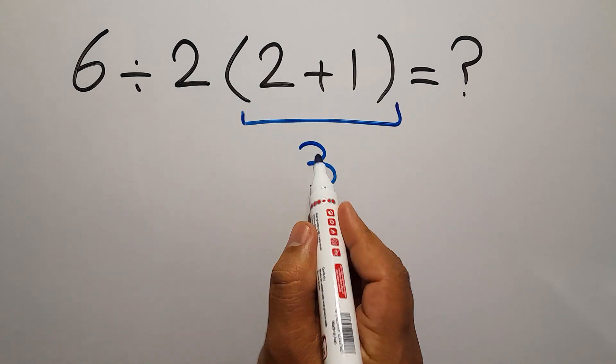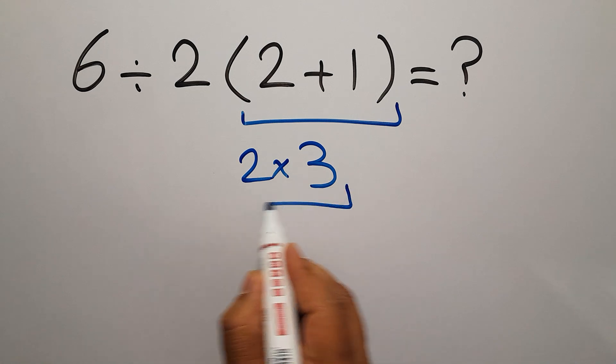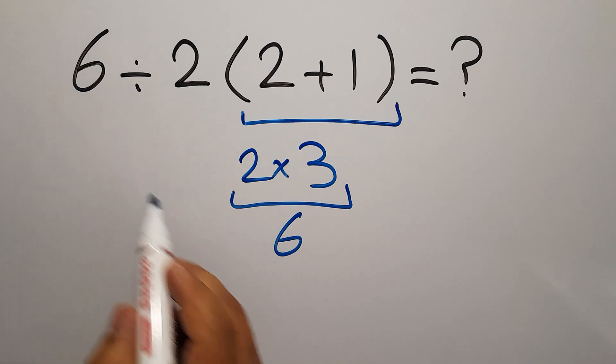So, 2 times this, 2 times 3, which equals 6. And we have here 6 divided by 6,